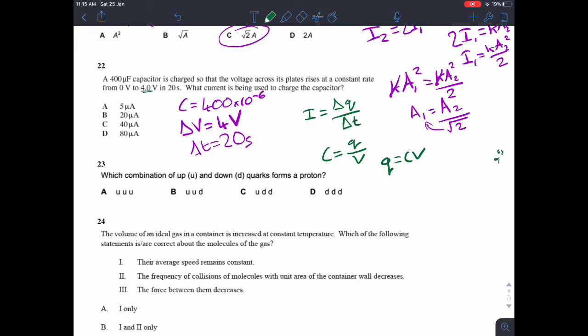So if Q equals CV, then the change in charge is C delta V, and so we can substitute that in up here. So I equals C delta V over delta T, and then you can plug in all of your data into that equation, because we've got all the data here, which gives you a final current of 80 microamps.